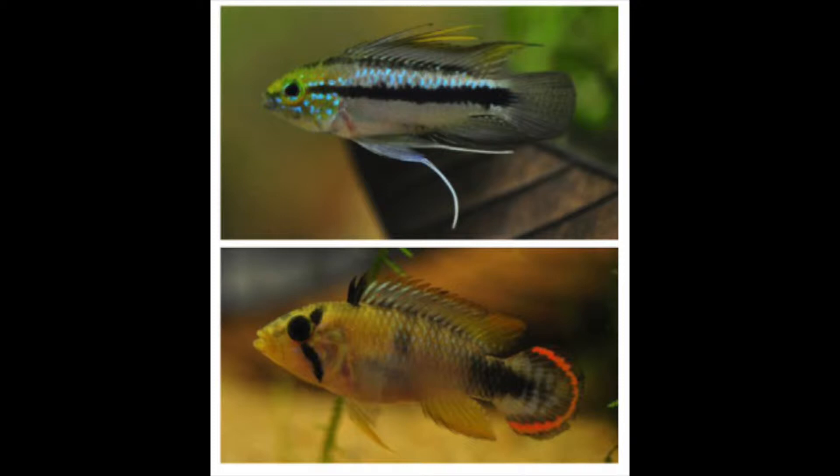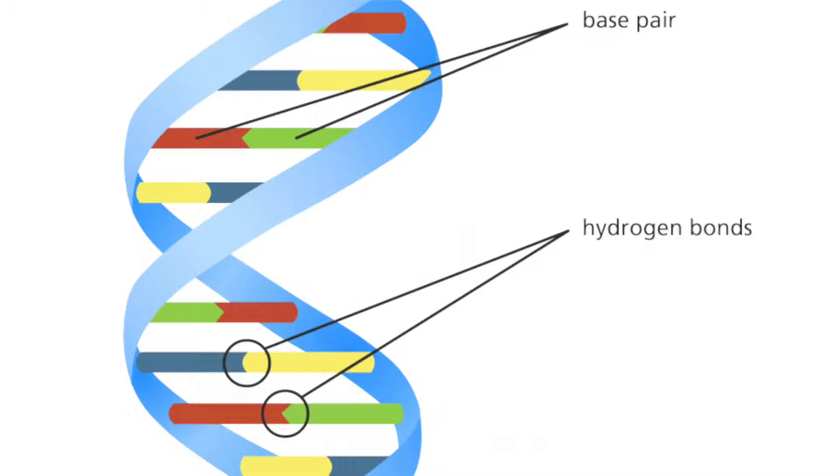This technique can be problematic, though. Take a look at these two fish. They have different color patterns, so they should be two different species, right? But as it turns out, these are the same species.